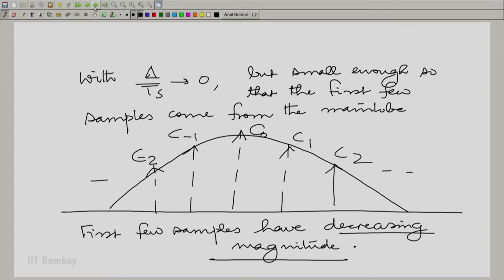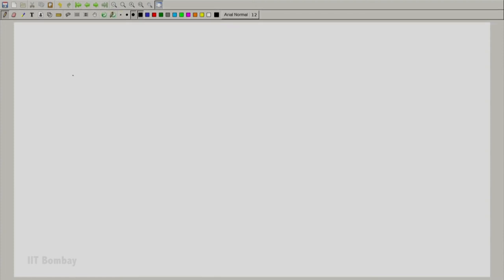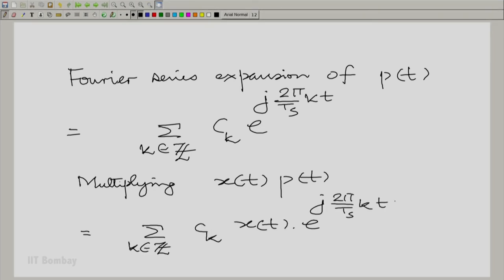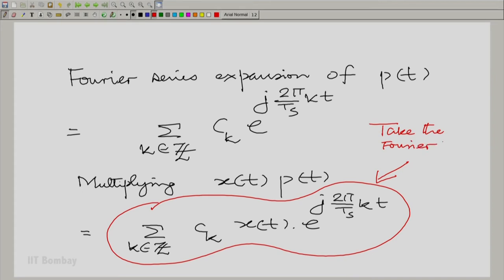In fact, now let us write down formally, let us write a Fourier series expansion. That is very easy to do, it is summation k over all the integers. I am sure you must have now got used to this notation, k belongs to the set of integers. And when we multiply x(t) by p(t), what are we getting? Now, this is a very interesting expression, we can easily take the Fourier transform of this. We can take the Fourier transform term by term.